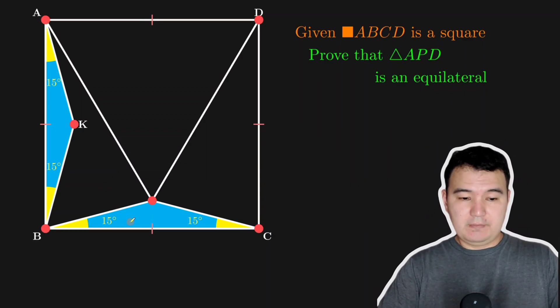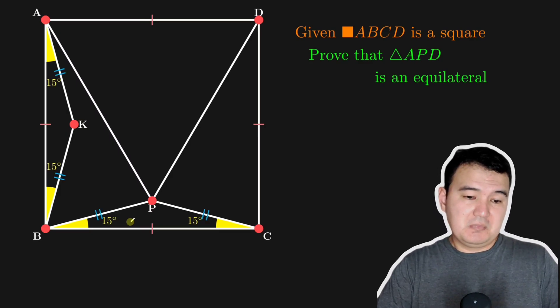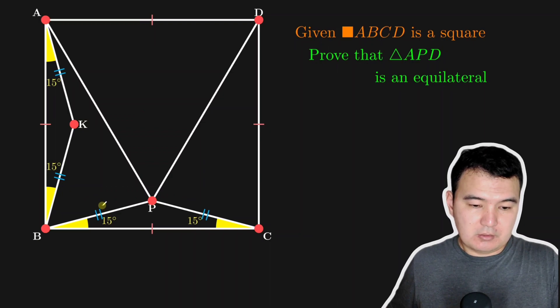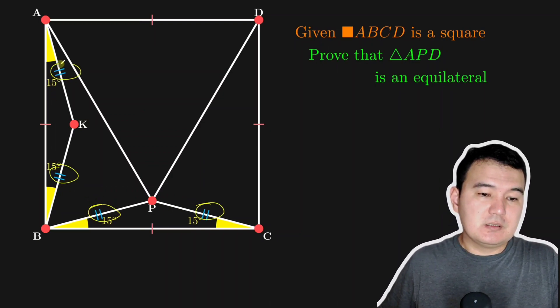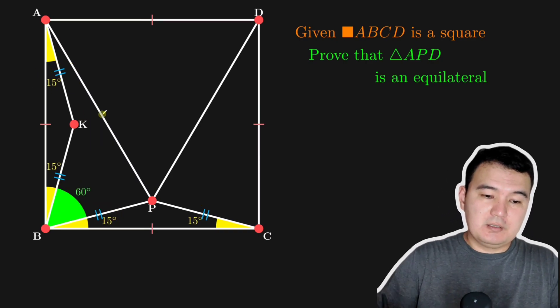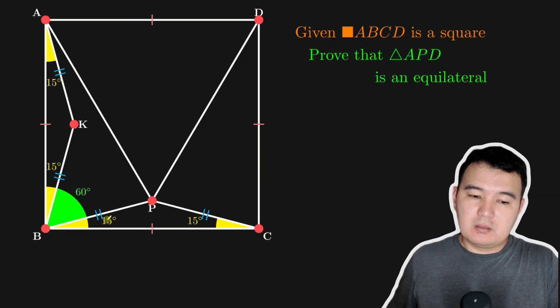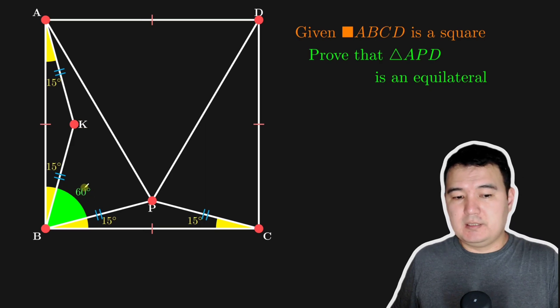And what does that give us? So that will give us some angles or equal segments, congruent segments, this one, this one, these four segments are equal. And this angle is 60 degrees, because 15 here 15 totally should be 90 degrees. So we come up that this is 60 degrees.